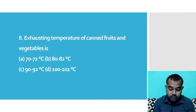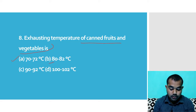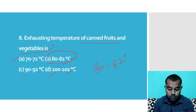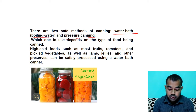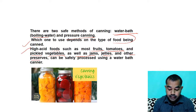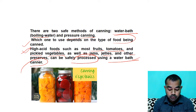The eighth question: the exhausting temperature of canned fruits and vegetables is? Options are 70, 72, 80–82, 90–92, and 100–102 degrees. The right answer is 82 degrees centigrade. Canning can be done by water bath, boiling water, or pressure canning, depending on which type of fruit you are canning. High acid foods such as fruit, tomato, pickles, vegetables, jam, jelly, and other preserves can be safely processed using a water bath canner.